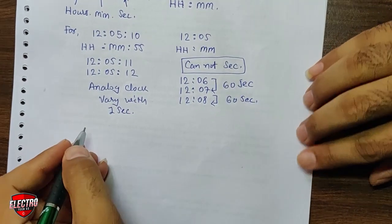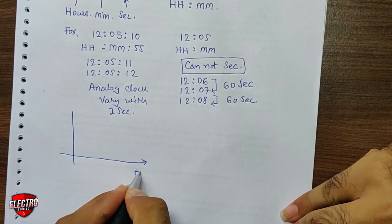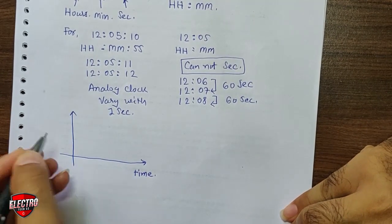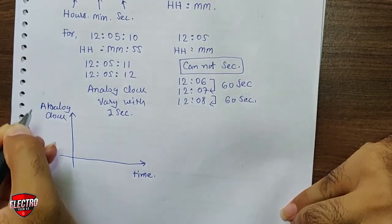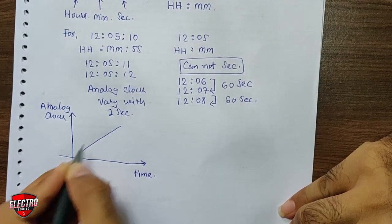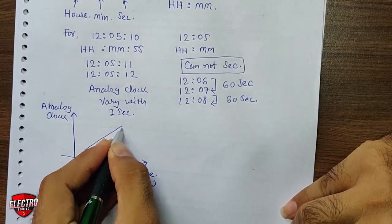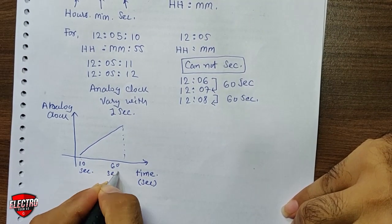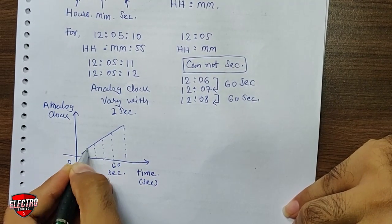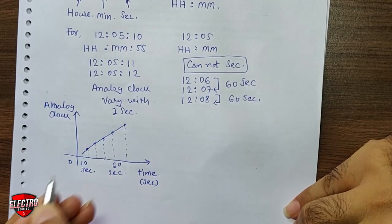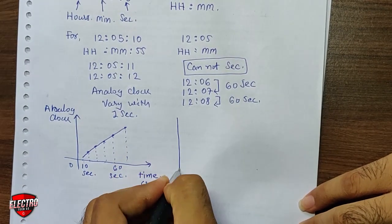If we draw the graph of both clocks with respect to time, the graph of the analog clock is continuous — from 10 seconds up to 60 seconds — meaning at each instant it indicates a different time. With respect to time in seconds, the value is different at every point.